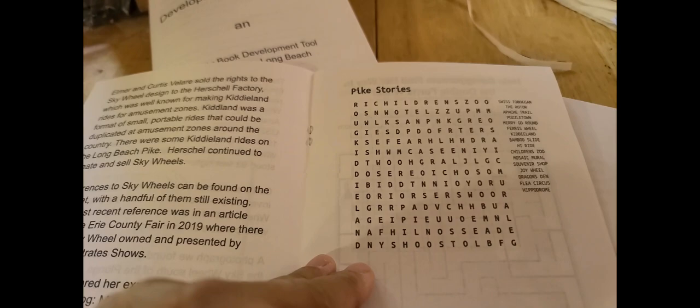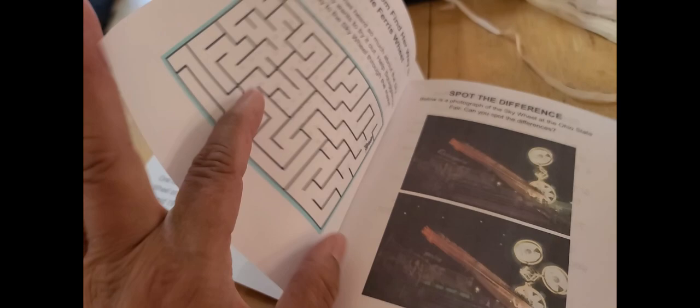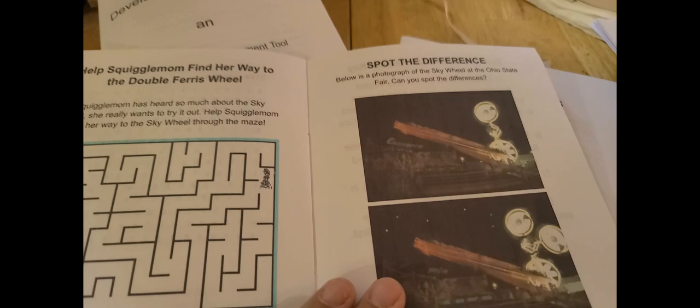Then the Pike Stories, which was this one, was an example that was created by LeClaire. And it used one of the websites, but they permit us to reuse it. This is that image from the maze from the Developing Activity Books guide. And then this is the spot the difference. So this is all themed around the Sky Wheel.